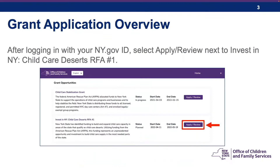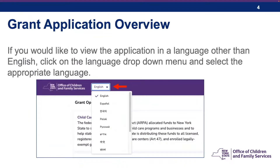After logging in with your ny.gov ID, click on the Apply/Review button next to Invest in New York Child Care Deserts RFA No. 1. If you would like to view the application in a language other than English, click on the Language drop-down menu on the top left of the page and select the appropriate language. The Child Care Deserts Grant Application is available in 12 languages.